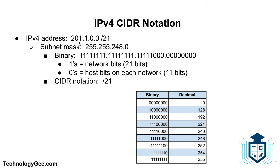Next example: IPv4 address 201.1.0.0. The 201 makes this a Class C address, which would normally have a subnet mask of 255.255.255.0, but with a CIDR notation of slash 21 we only use the first 21 bits. That gives us eight ones, eight ones, and then five ones followed by three zeros — which equals 248. The ones equal the 21 network bits and the zeros equal the 11 host bits, giving CIDR notation slash 21.